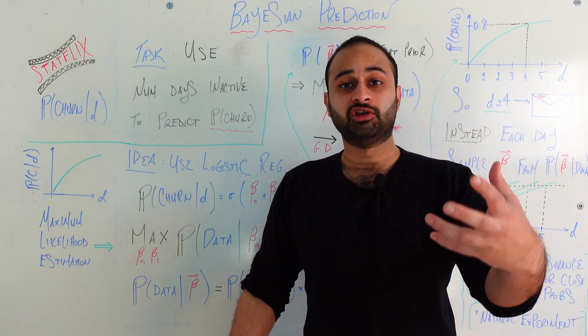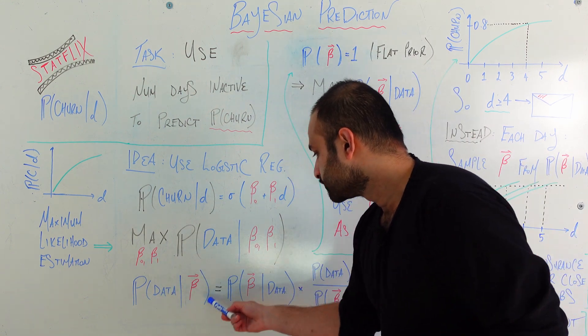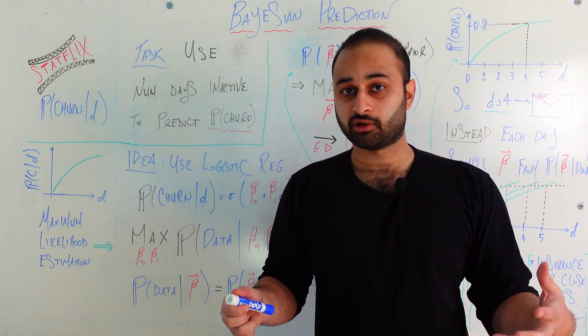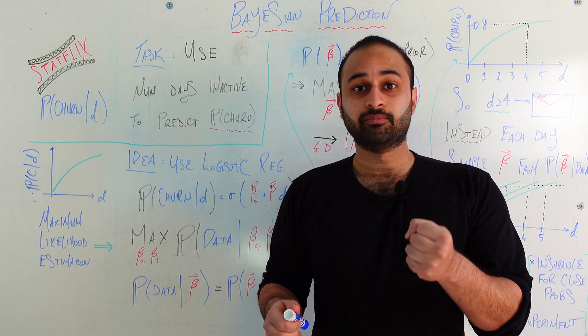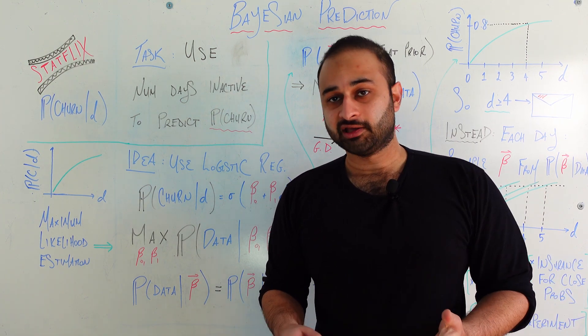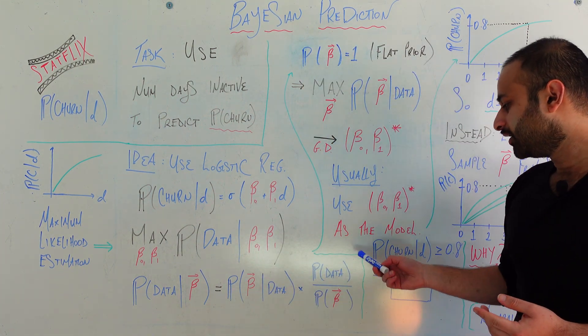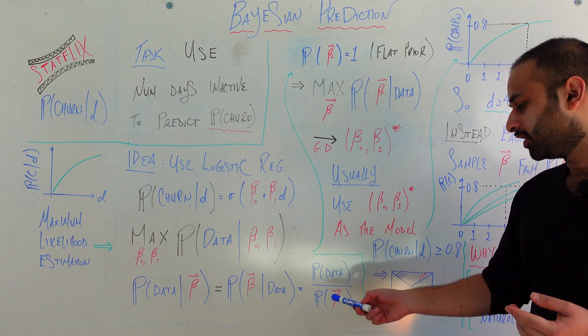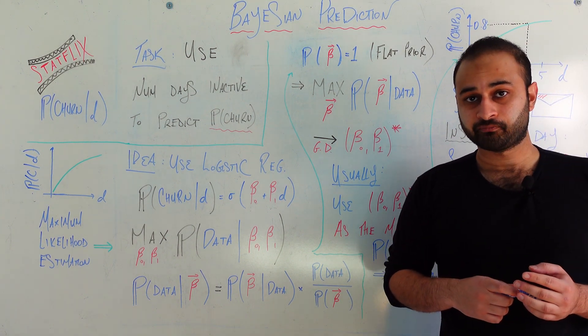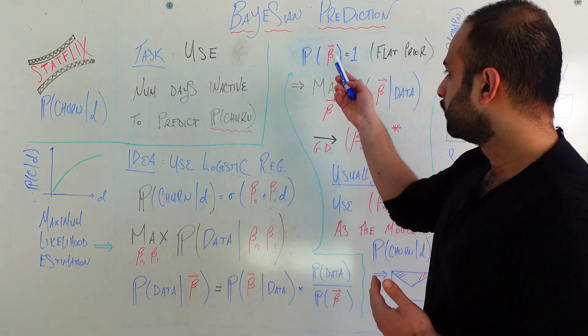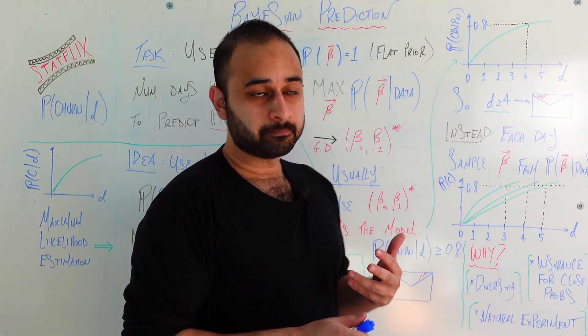Now comes the Bayesian twist. So let's write this probability again. Let's write this using Bayes' theorem. Of course, that is writing the reverse conditional probability of beta given the data times the probability of data divided by the probability of the beta vector. Now it'll be clear why we did this in a second. But first, let's follow this arrow up and try to simplify things a little bit.